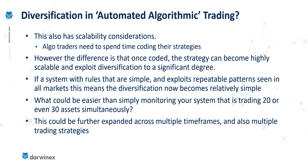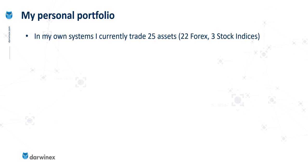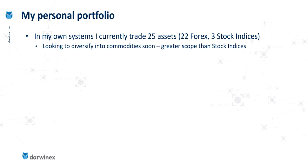Just to give some indication of my own diversification strategy, I currently trade 25 assets — that's made up of 22 currency pairs and three stock indices. Commodities is something that I've not really explored very much. I've performed some initial backtesting on those, and in general many of the systems I have appear to perform just as well, if not better, on some commodities. So this is an area that I'm looking to expand into and diversify into shortly.